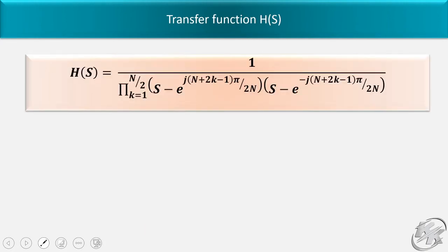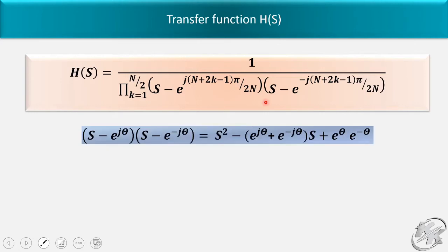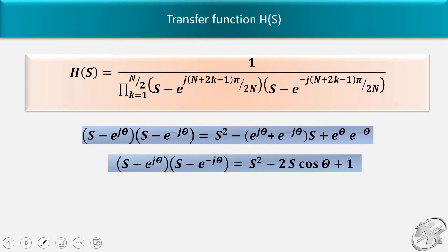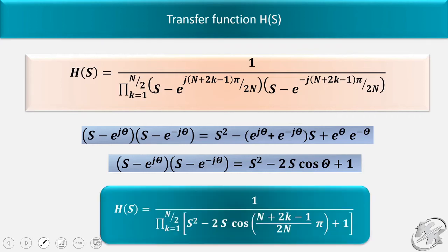For two conjugate poles e^(jθ) and e^(-jθ), multiplying (s - e^(jθ))(s - e^(-jθ)) gives s² - (e^(jθ) + e^(-jθ))s + 1, which equals s² - 2cos(θ)s + 1. Putting that value into our transfer function, we have the final transfer function H(s) for even n as shown in the figure.